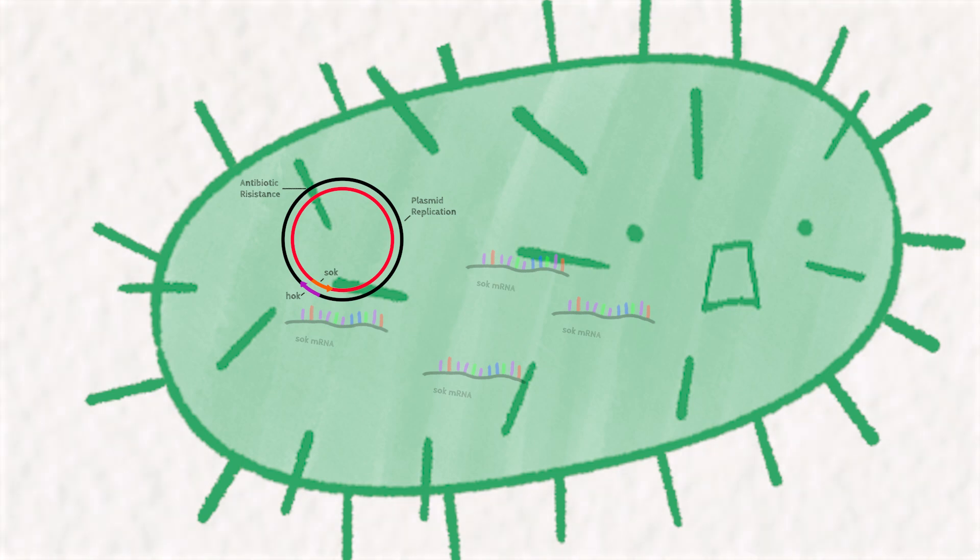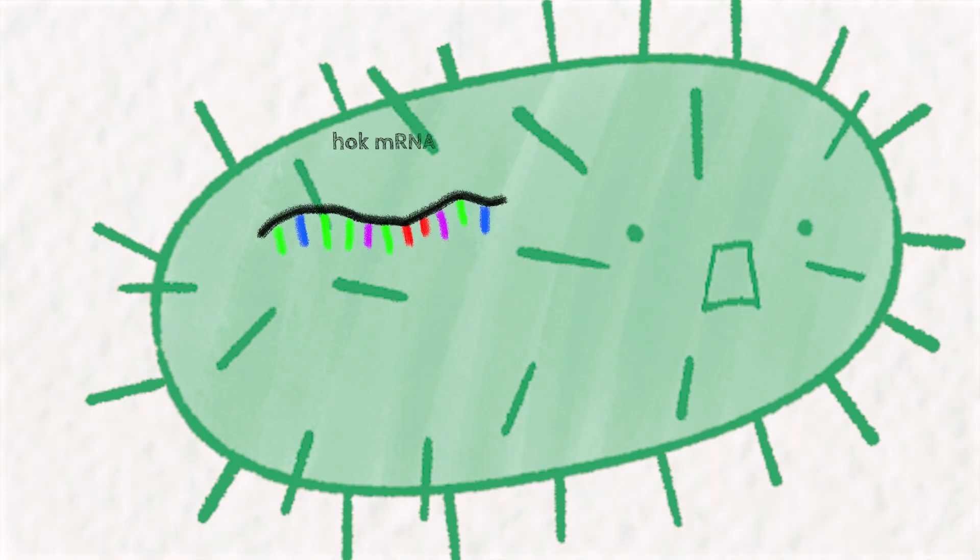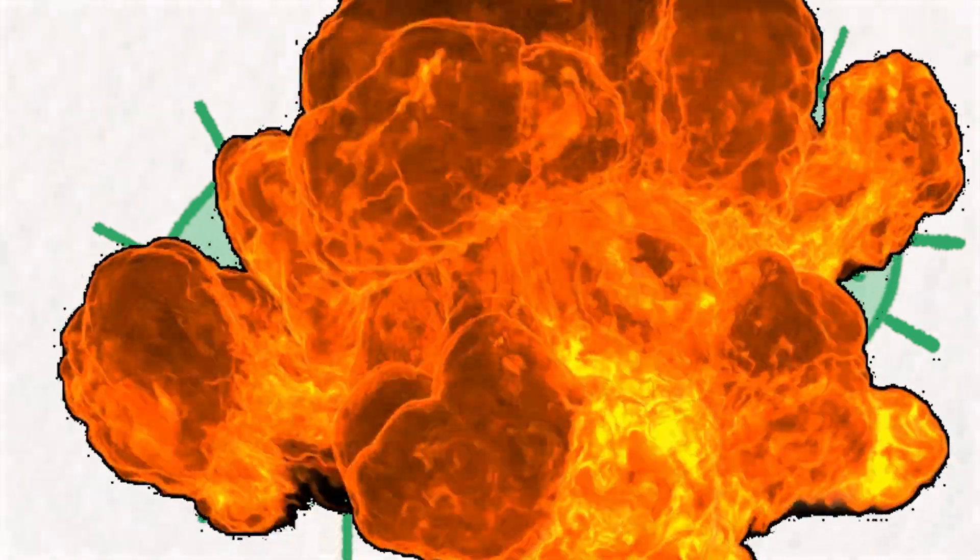If, for whatever reason, the bacteria were to lose that plasmid, the antitoxin would quickly degrade but the mRNA that makes the HOC toxin will still be around, able to be made into protein, killing the bacteria.